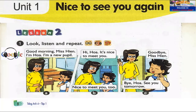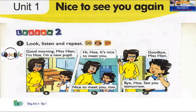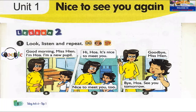Page 8, Lesson 2, Activity 1: Look, listen and repeat. Good morning, Miss Hien. Good morning, Miss Hien. I'm Hua. I'm a new pupil. B: Hi, Hua. It's nice to meet you. Nice to meet you, too. C: Goodbye, Miss Hien. Bye, Hua. See you tomorrow.